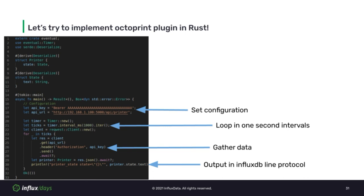First, you need some way to set any user-definable configuration. Second, you need a repeatable way to send metrics to ExecD — this implementation uses a time-based loop, but as we've seen, you can also wait for a new line signal from standard in. Third, you need to gather the data — in this program we directly call the REST API endpoint to get the 3D printer state. And finally, you need to output the data in a supported data format, in this case InfluxDB line protocol. The terminal successfully outputs the state operational, and we now have part of the OctoPrint plugin working in Rust.